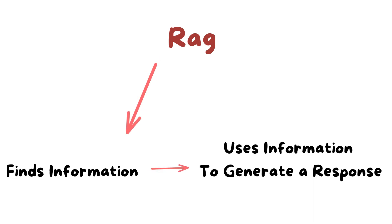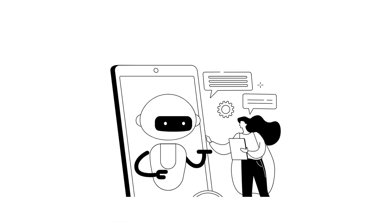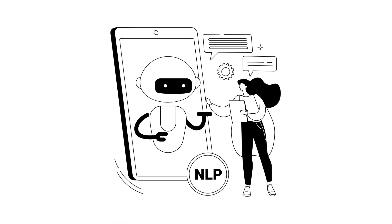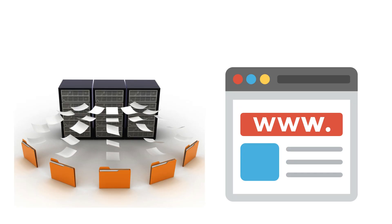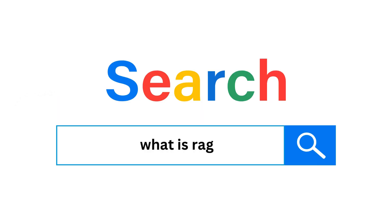RAG, which is short for Retrieval Augmented Generation, is a technique in natural language processing. It works in two ways. First is retrieval: it works by finding relevant information from a large database of text, like articles or websites, based on your query. This is similar to how a search engine works.